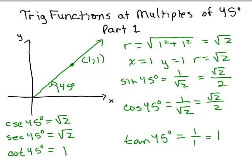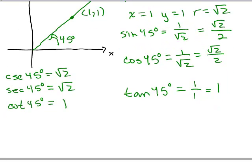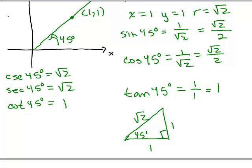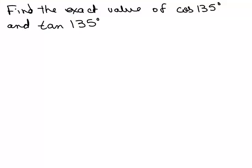Often when we look at 45 degrees, we think of that as the 45-45-90 degree triangle, with sides 1, 1, square root of 2. We'll also be doing problems where the angle is in a different quadrant — multiples of 45 degrees such as 135 degrees, which is 45 times 3.